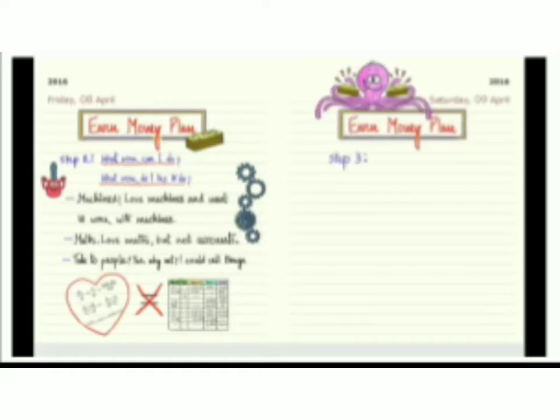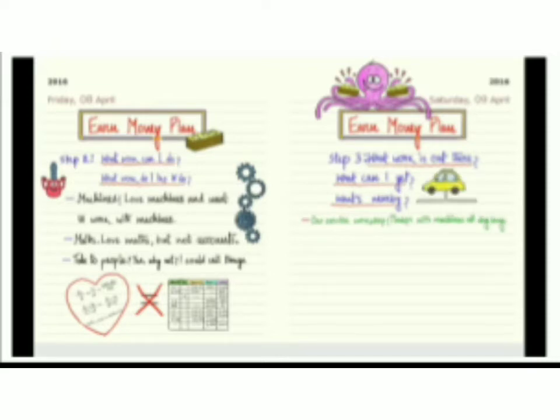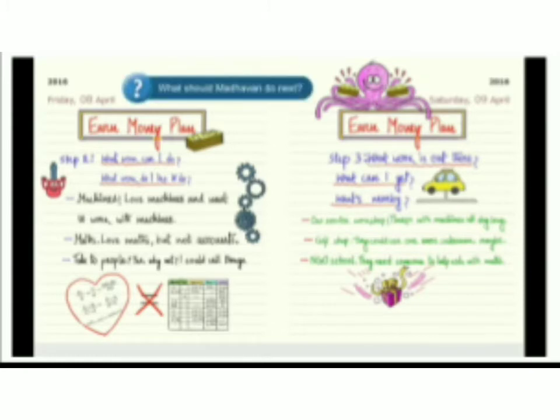Step 3: What work is out there? What can I get? What's nearby? Car service workshop: tinker with machines all day long. Gift shop: they could use one more salesman. NGO school: they need someone to help kids with maths. What should Madhavan do next?